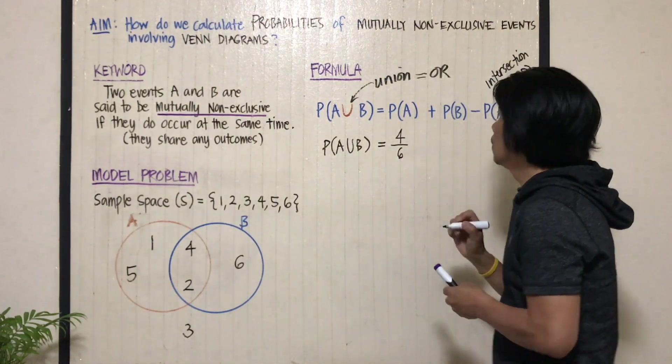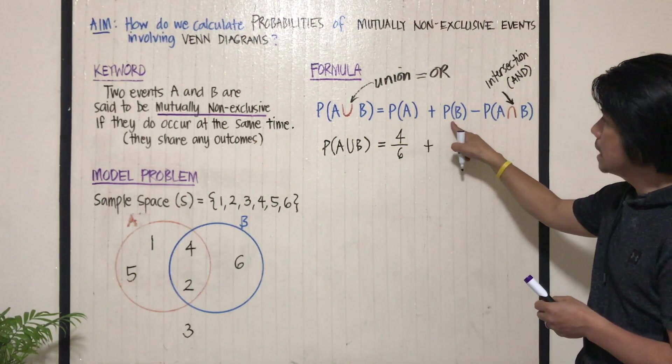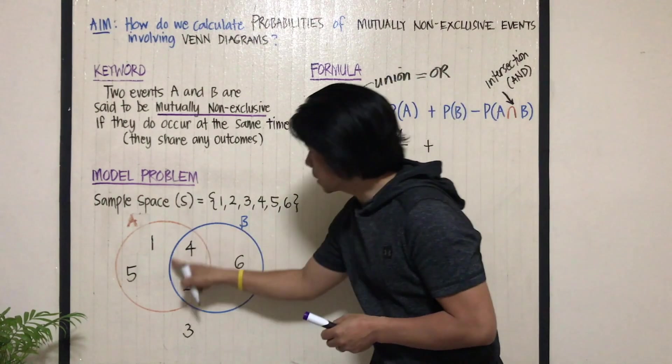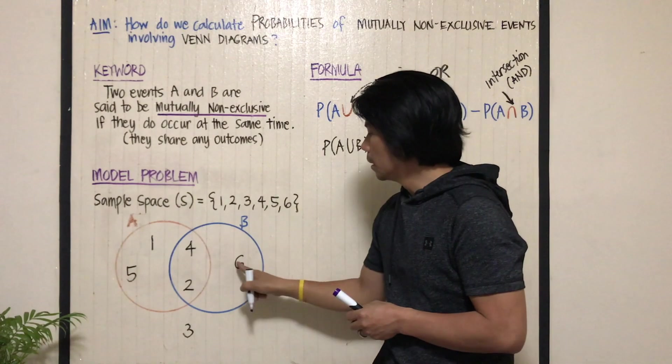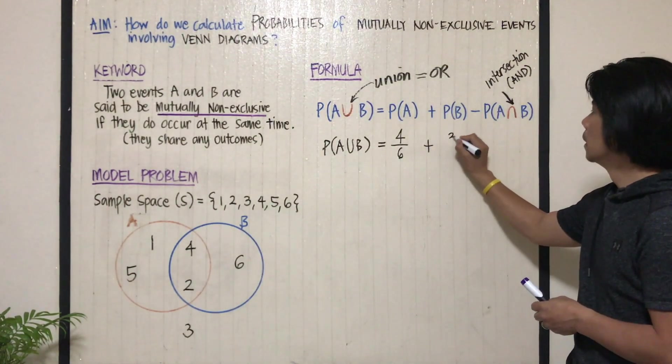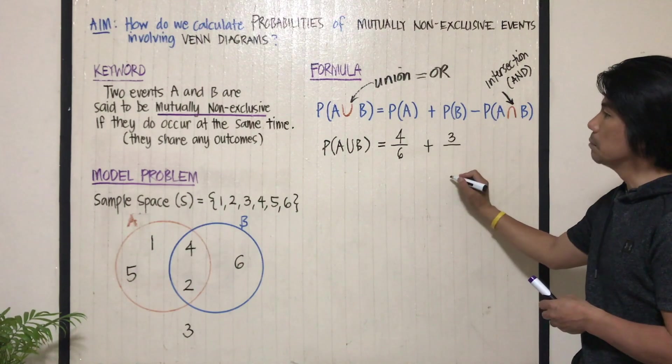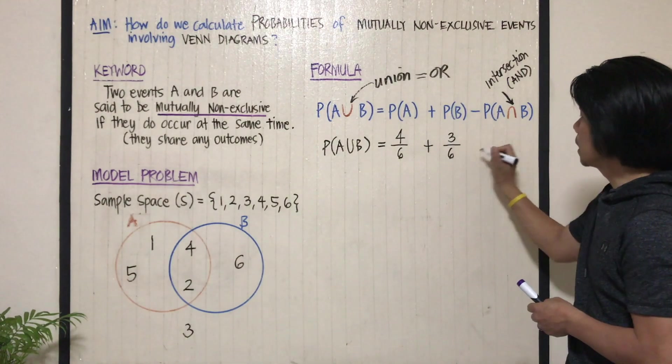So it's four over six plus the probability of B. Meaning, the circle B, how many numbers did you see inside circle B? The six, the four, and two, there are three numbers inside circle B. Out of, again, the sample space is equal to six.